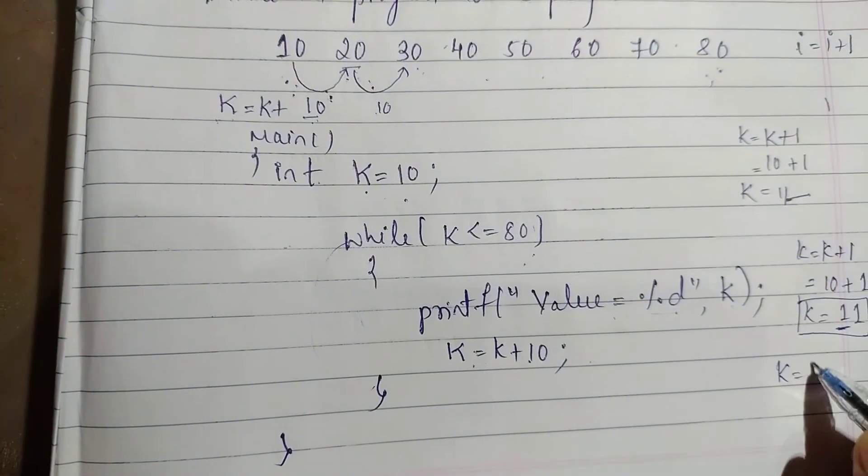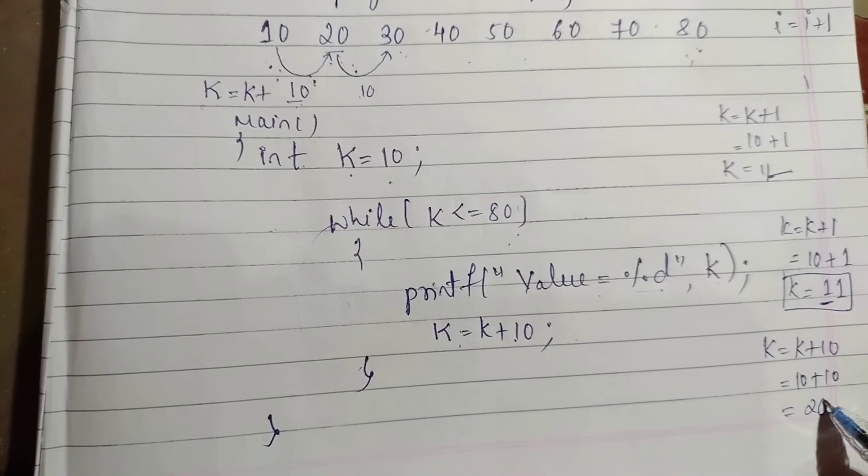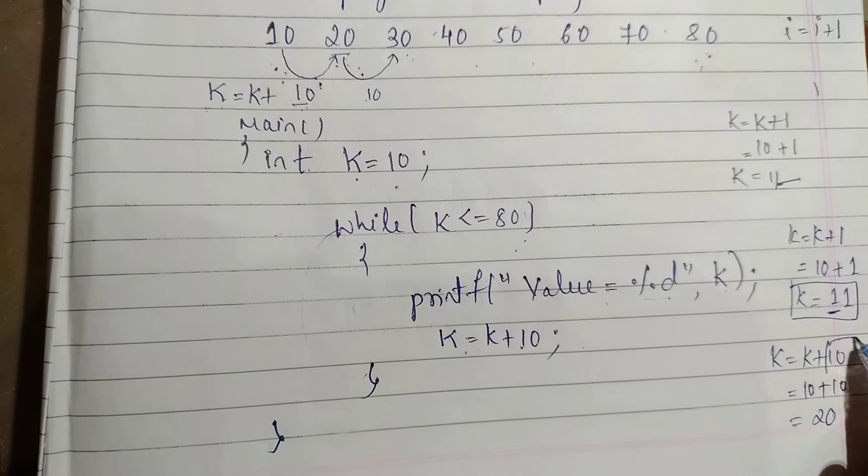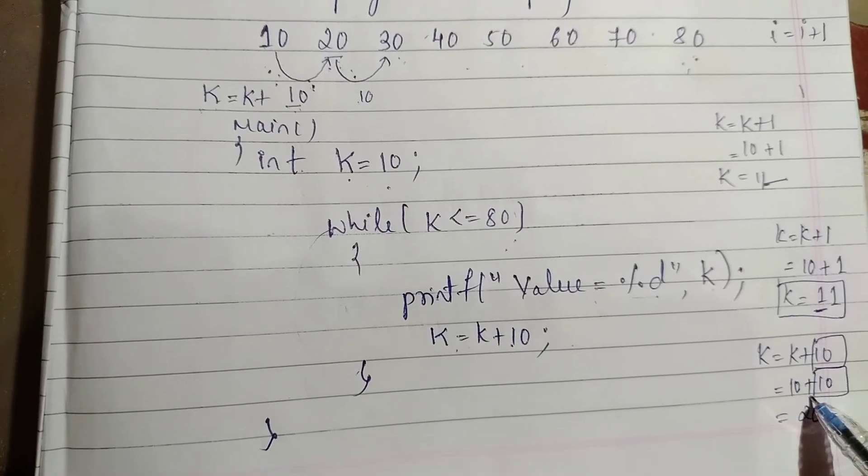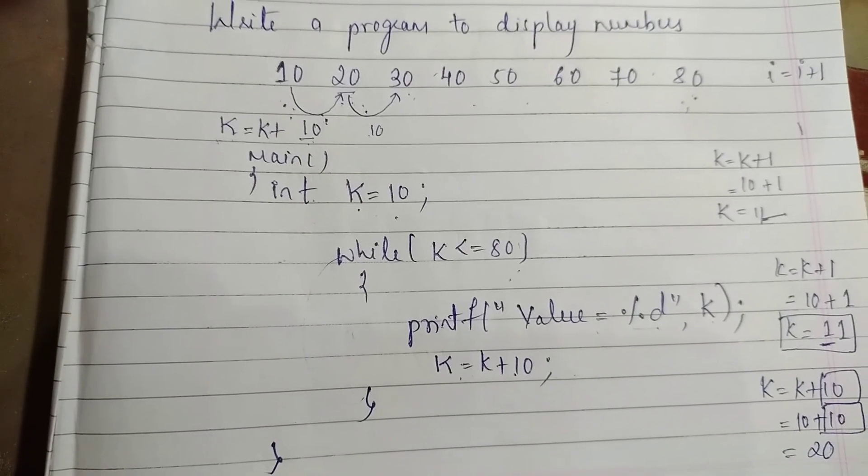So we use K = K + 10, that is 10 + 10 = 20. Every time we increment the counter by 10. Hope this example is clear. Thank you.